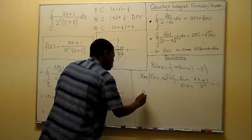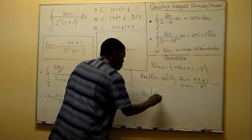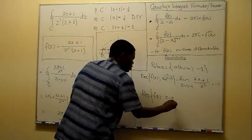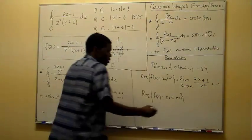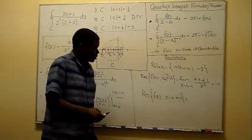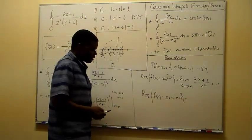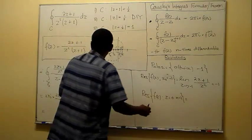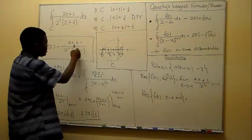The complete function is (2z + 1) over [z-squared times (z + 1)]. To get the residue we multiply by (z − z₀) = (z + 1); this cancels the (z + 1) factor, and evaluating at z = minus 1 gives (minus 2 + 1) over 1, which is minus 1. So the residue at z = minus 1 is minus 1.